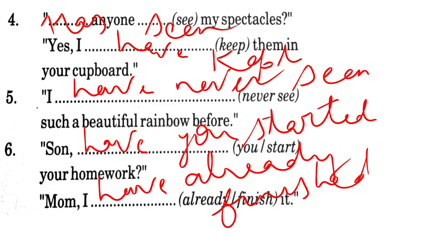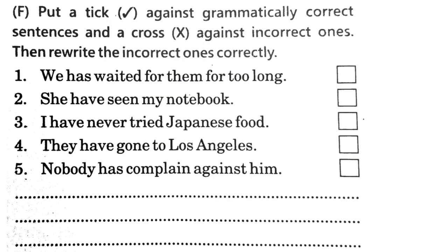Put a tick against grammatically correct sentences and a cross against incorrect ones, then rewrite the incorrect ones correctly. 'We has waited for them for too long.' This is wrong. For 'we', we always use 'have': 'We have waited for them for too long.'